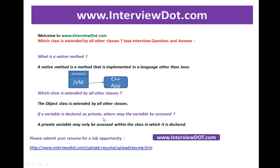The next question: if a variable is declared as private, where may it be accessed? Private, public, and protected are all for security purposes. If I want to make a variable available only within a class, I make it private — no one outside the class can access it. This prevents invalid values being set and keeps the system stable. Always remember: private means the variable is visible and accessible only within the class.